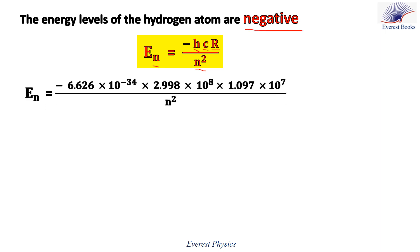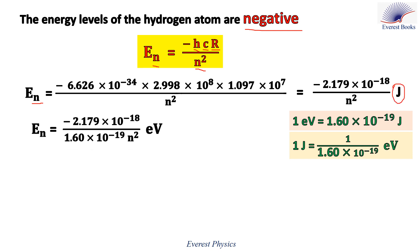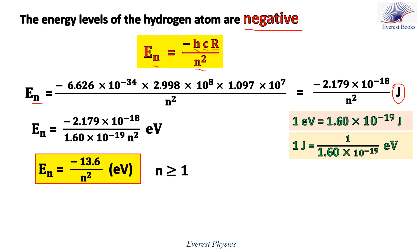Replacing hcR with its numerical values in SI units, we get the energy level of quantum number n. Since one electron volt equals 1.6 times 10 to the power minus 19 joules, replacing joules accordingly, the energy level of quantum number n equals minus 13.6 over n squared electron volts.